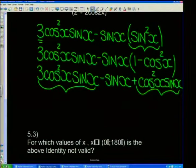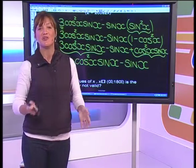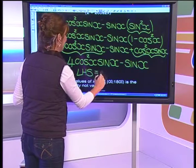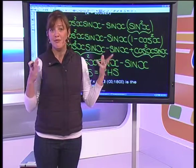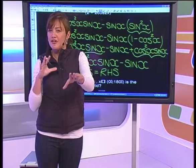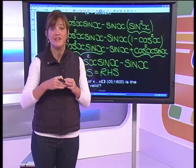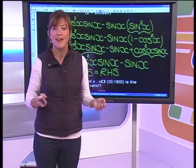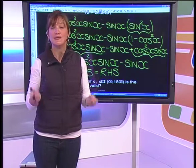Collecting like terms: 3cos²x·sinx plus cos²x·sinx gives us 4cos²x·sinx, minus sinx. That is exactly 4sinx·cos²x minus sinx — the right-hand side we wanted to prove. So the left-hand side equals the right-hand side. Go back and work through that example yourself; it's like a puzzle, and you'll develop a feel for it with practice.